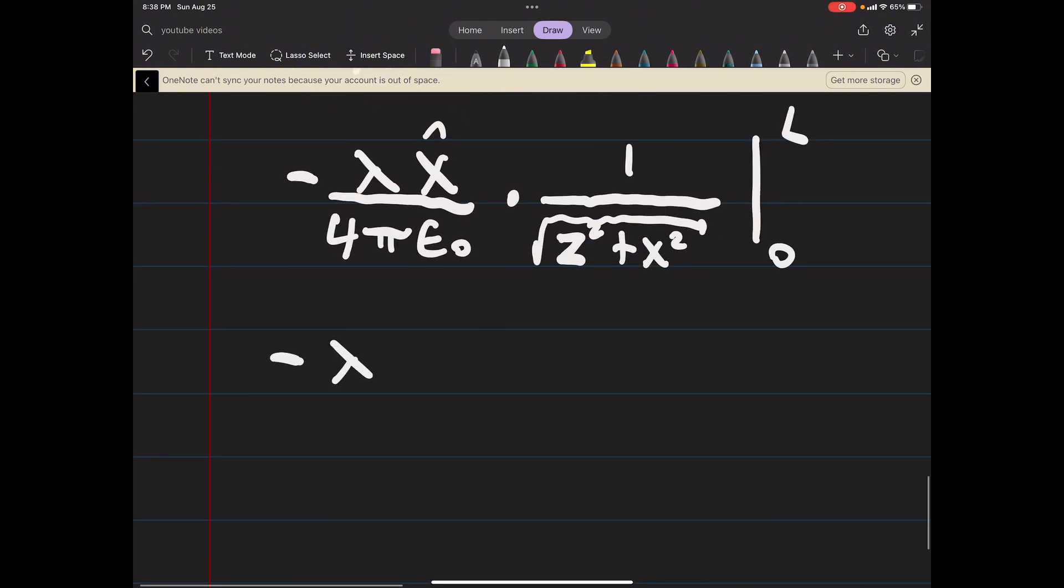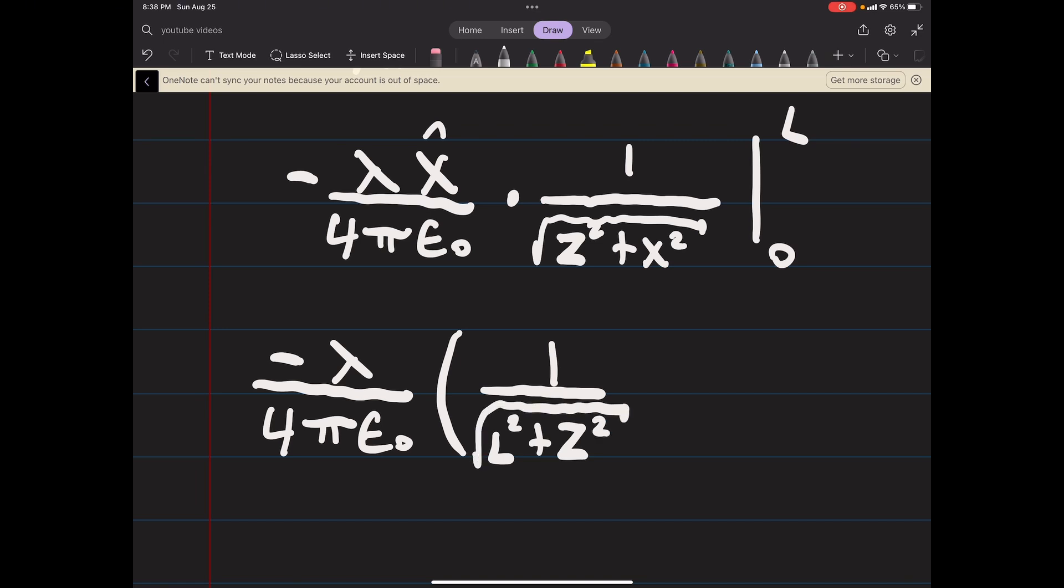We evaluate this from 0 to L. That'll be minus lambda over 4 pi epsilon naught. If we just plug in the L squared there, then if you plug in the 0 it'll just be square root of z squared, or 1 minus z, and again in the x hat direction.